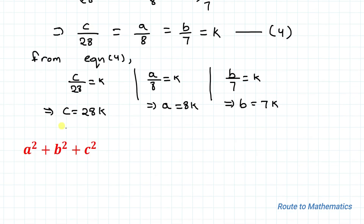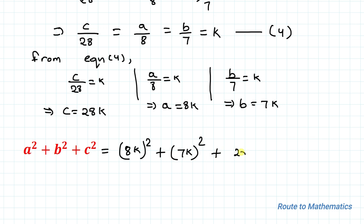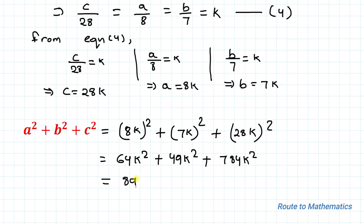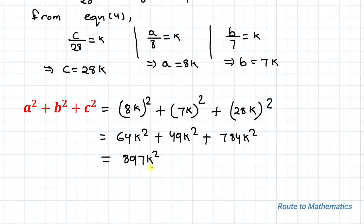Now substituting into a² + b² + c²: a² = (8k)² = 64k², b² = (7k)² = 49k², and c² = (28k)² = 784k². Adding these gives 64k² + 49k² + 784k² = 897k².